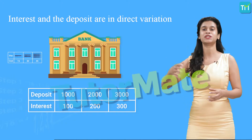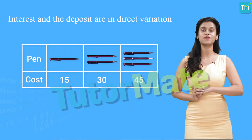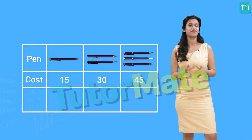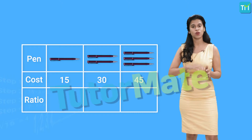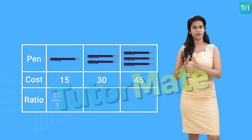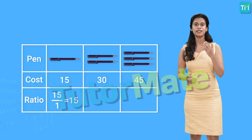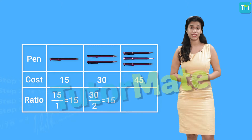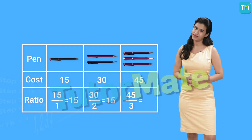We see that as the amount increases, even the interest paid by the bank increases. In the first example, the cost of the pens was increasing with the increasing number of pens. So let's see what happens if we calculate the ratio of total cost of pens to the total number of pens for all 3 situations. For 1 pen we had to pay 15 rupees, so the ratio is 15 upon 1, which is equal to 15. For 2 pens we paid 30 rupees, so the ratio is 30 upon 2, again equal to 15. For 3 pens we paid 45 rupees, so the ratio is 45 upon 3, yet again equal to 15.